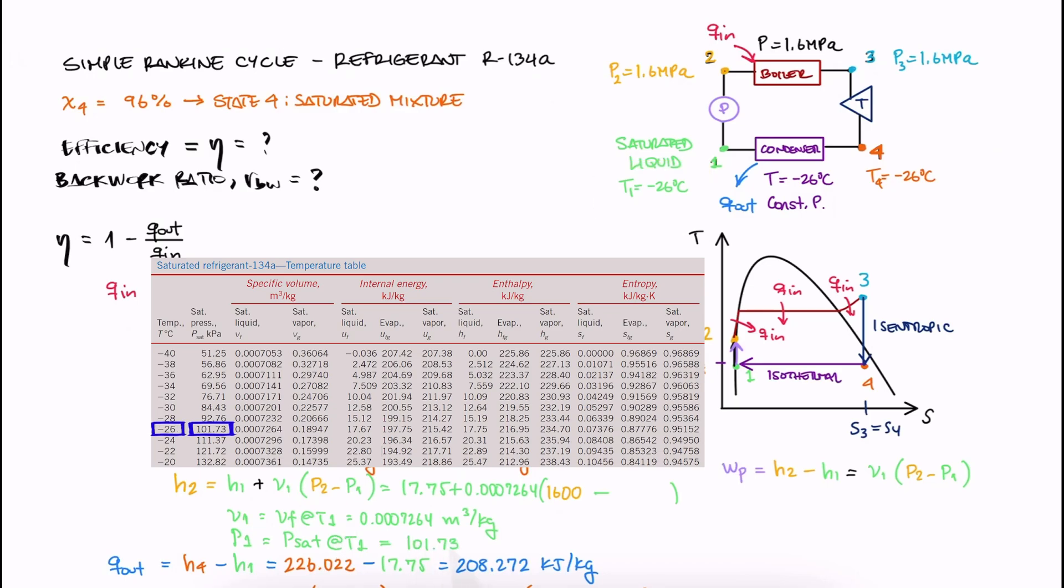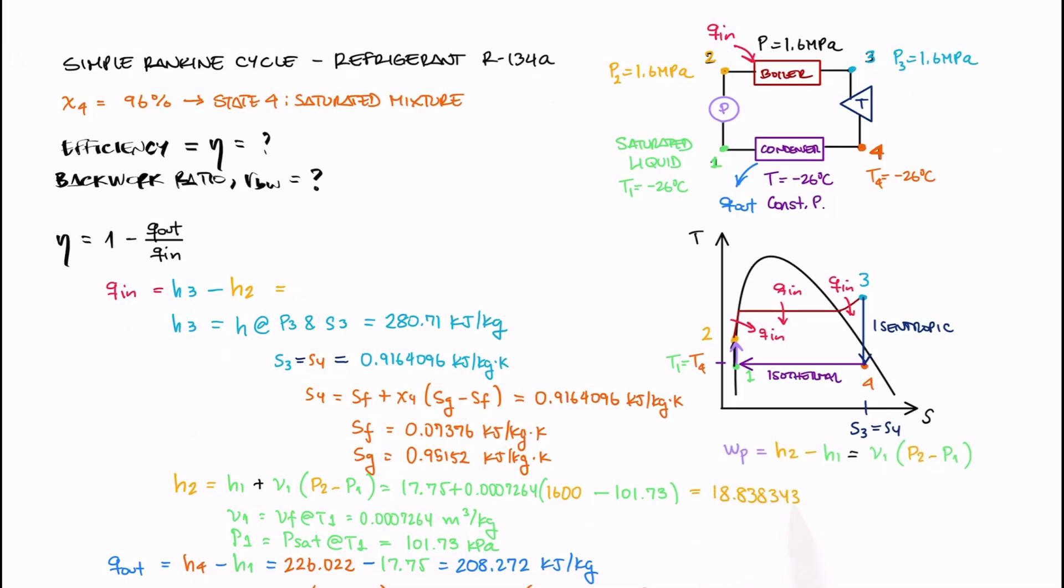And because that's the case, P1 has to be the saturation pressure at T1. If it was not, the refrigerant could not be at a saturated state. We substitute those values to find H2, and the two H values to find Q_in. And with both Q values, we can calculate the efficiency.